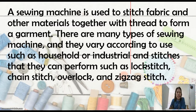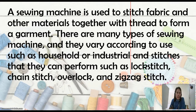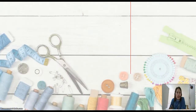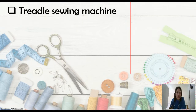A sewing machine is used to stitch fabric and other materials together with thread to form a garment. There are many types of sewing machine and they vary according to use, such as household or industrial, and in the stitches that they can perform, such as lock stitch, chain stitch, overlock, and zigzag stitch. For this quarter we will be using hand stitch, but let me discuss the different sewing machines used in sewing, especially in industrial companies. Let us identify what kind of sewing machine you have at home.